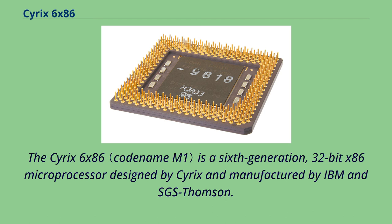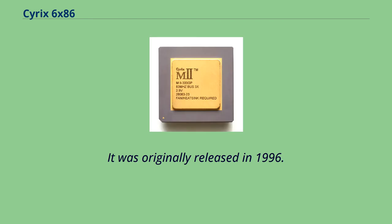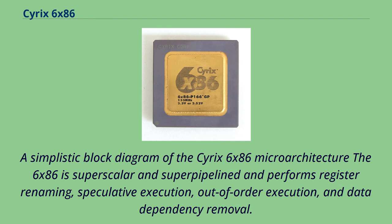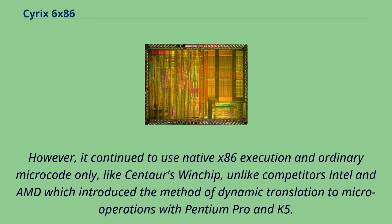The Cyrix 6x86 is a 32-bit x86 microprocessor designed by Cyrix and manufactured by IBM and SGS Thompson. Originally released in 1996, the 6x86 is superscalar and superpipelined, and performs register renaming, speculative execution, out-of-order execution, and data dependency removal. However, it continued to use native x86 execution and ordinary microcode only, like Centaur's Winchip, unlike competitors Intel and AMD, which introduced dynamic translation to microoperations with the Pentium Pro and K5.